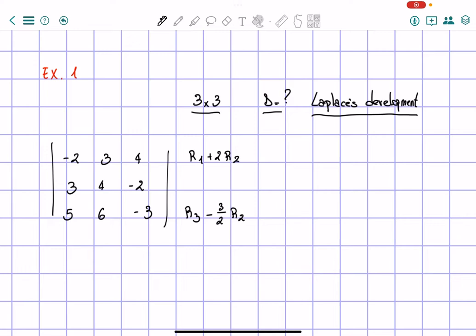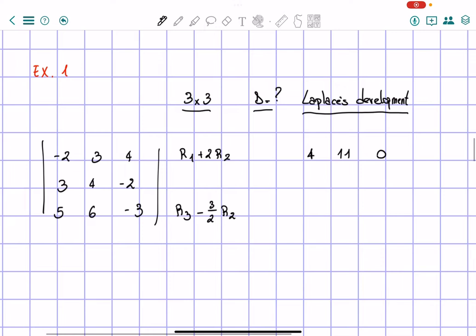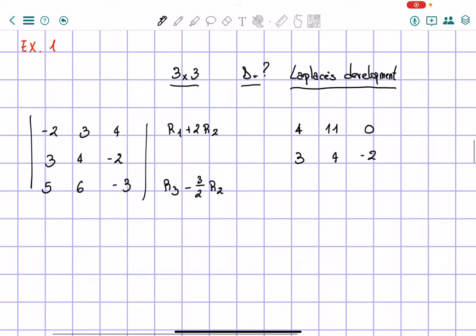So here we're going to write the first line. We're gonna have 4, then 11, 0. Row 2 remains the same, so 3, 4, negative 2.